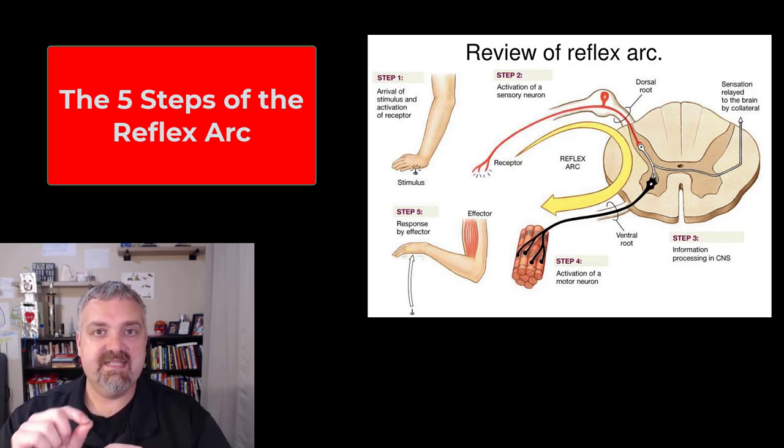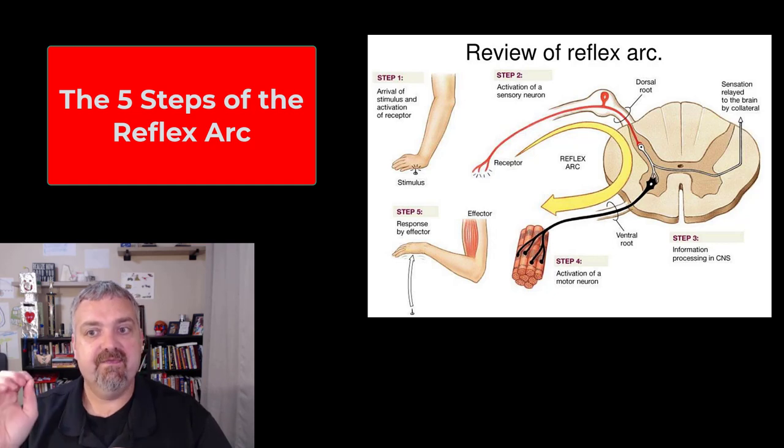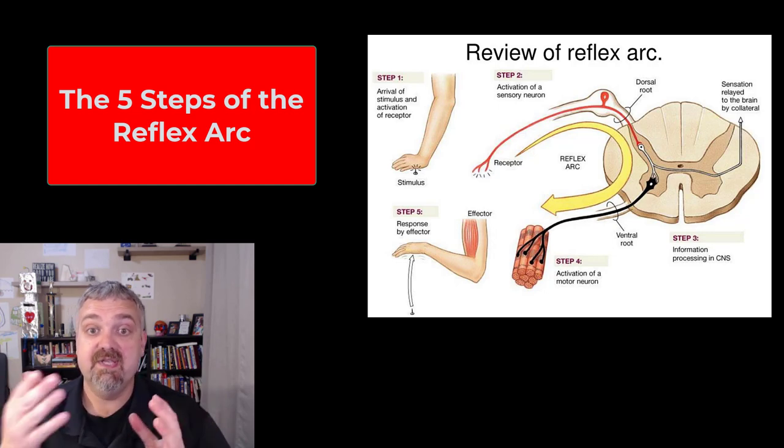So this entire wired circuit here would be called a reflex arc. It starts with a peripheral receptor, then a sensory nerve, then the information is going to be processed at the level of spinal cord here for a spinal reflex, then a motor nerve, and then your peripheral effector. So those are going to be the parts.